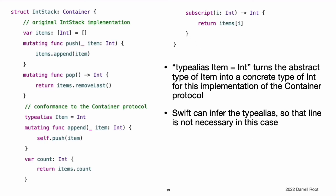Here is a version of the non-generic intStack type from generic types above, adapted to conform to the container protocol. The intStack type implements all three of the container protocol's requirements, and in each case wraps part of intStack's existing functionality to satisfy these requirements. Moreover, intStack specifies that for this implementation of container, the appropriate item to use is a type of integer. The definition of type alias item equals integer turns the abstract type of item into a concrete type of integer for this implementation. Thanks to Swift's type inference, you do not actually need to declare a concrete item of integer as part of the definition of intStack. Because intStack conforms to all of the requirements of the container protocol, Swift can infer the appropriate item to use simply by looking at the type of the append method's item parameter and the return type of the subscript.